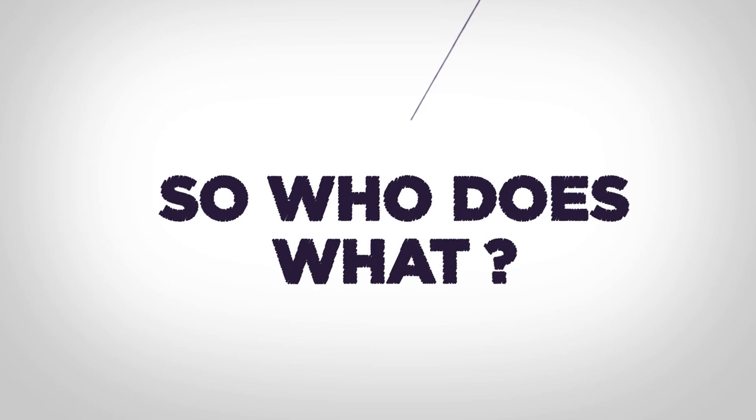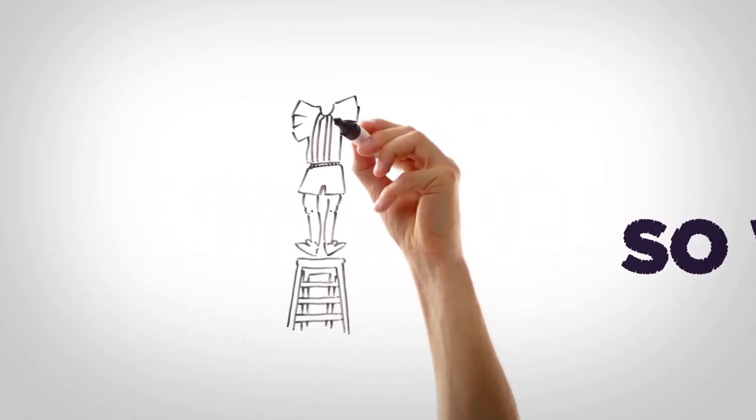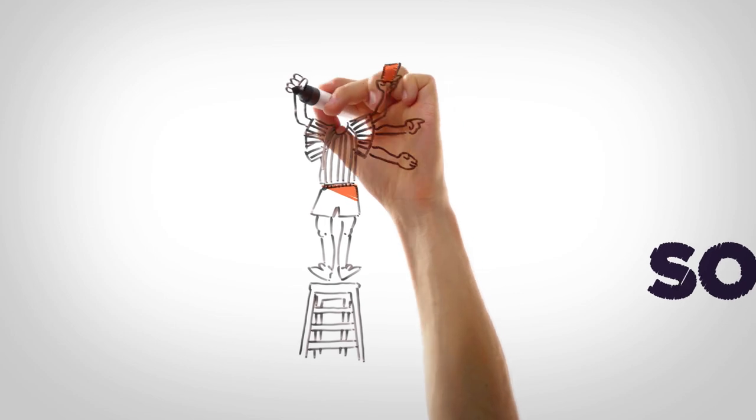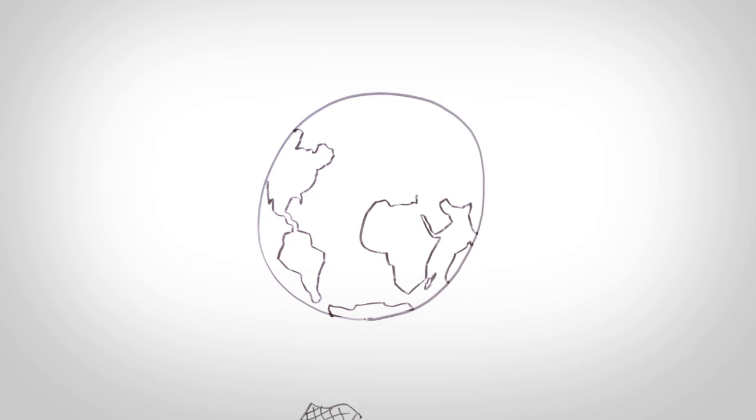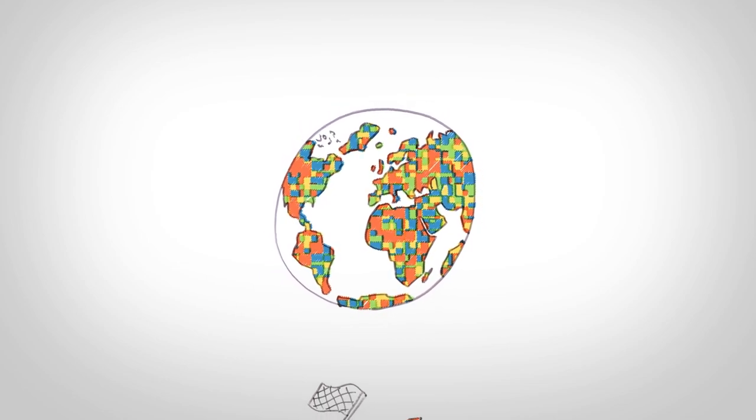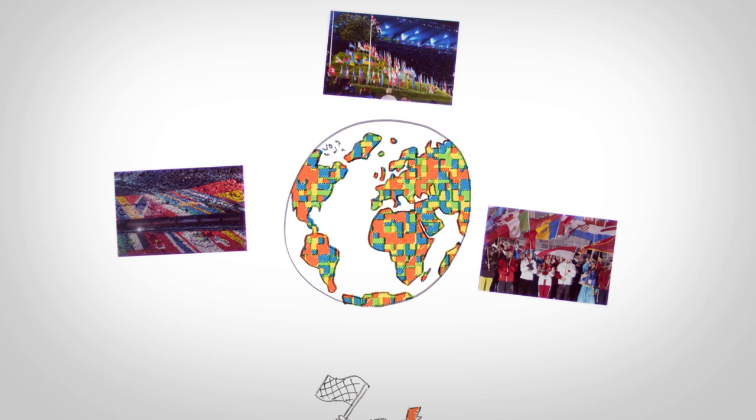So, who does what? Each of the sports that takes part in the Olympic Games has an international federation that runs the sport all year round. From rules to referees to records, that's their job. And then there are the more than 200 national Olympic committees around the world. Their job is to select the best athletes and get them ready for the Games.